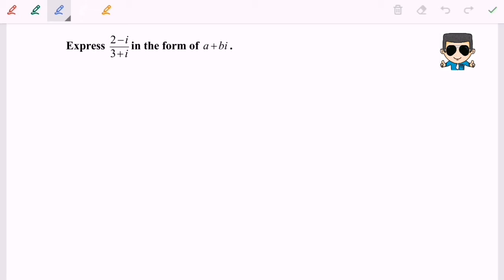Express 2 minus i over 3 plus i in the form of a plus bi, meaning that 2 minus i over 3 plus i equals a plus bi.